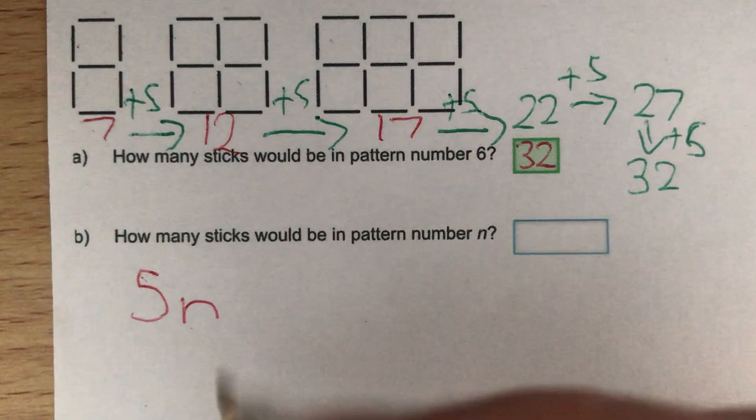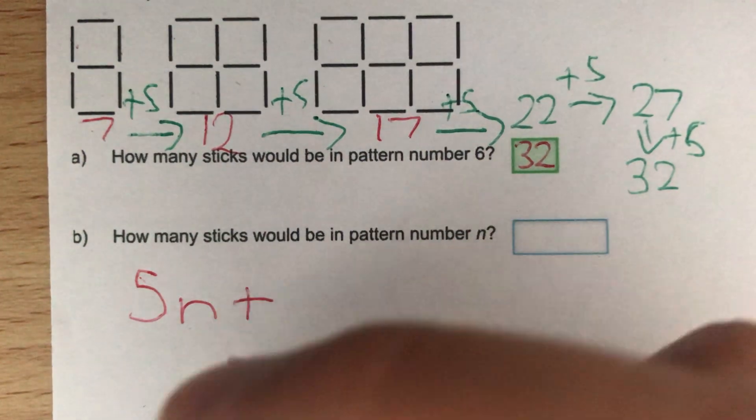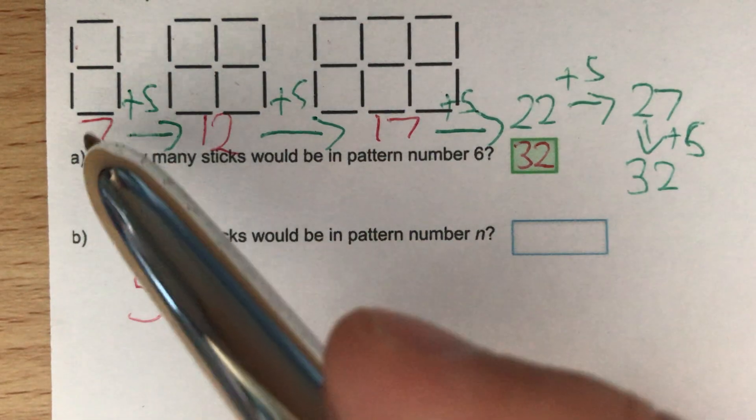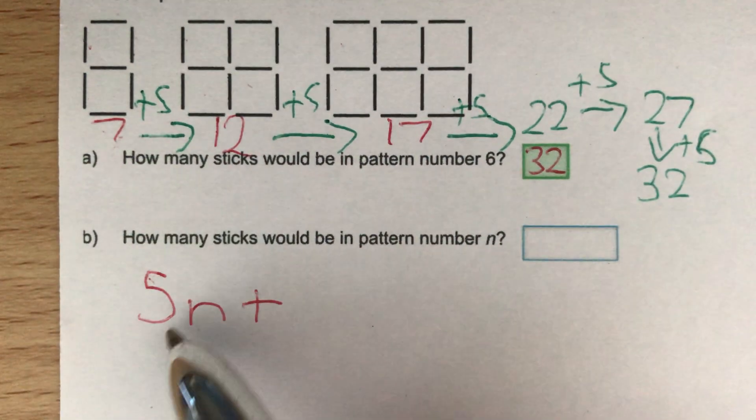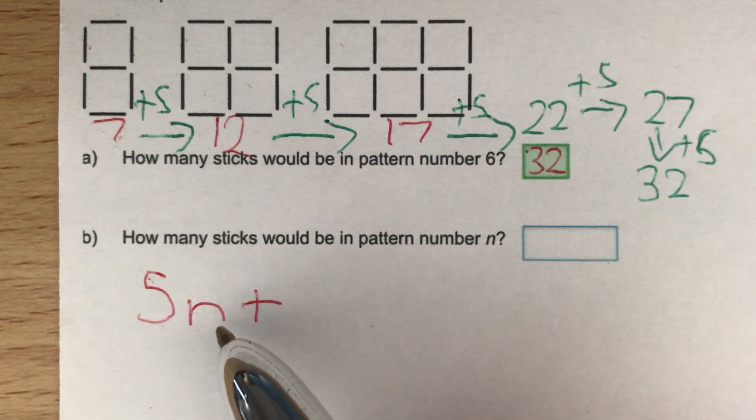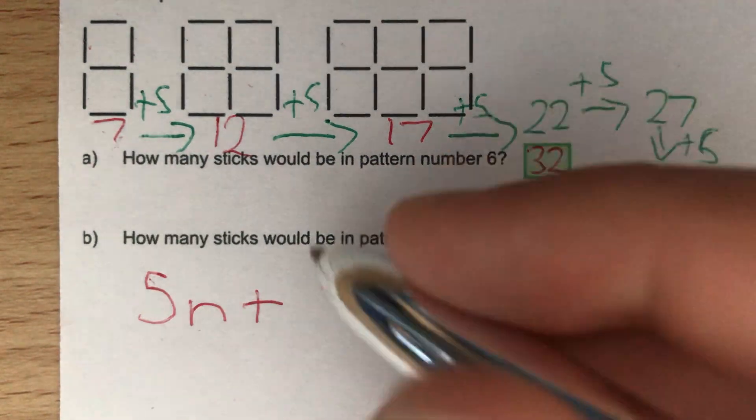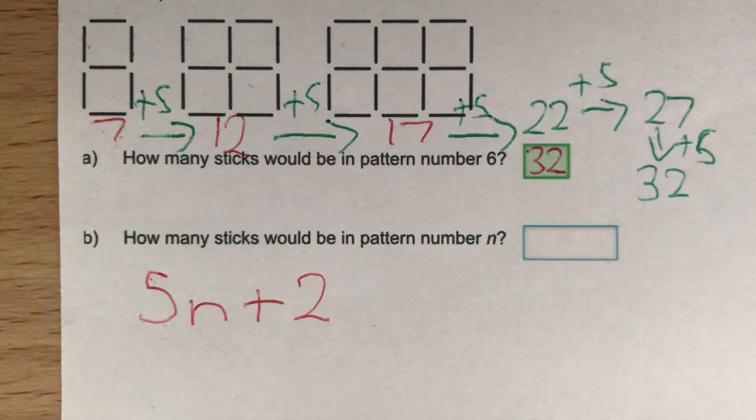And then to work out what we add on to the end of this, we need to think about what our first term is, so our first term is 7. If we've got 5 in front of the n, our first term is 7, to get from 5 to 7 we have to add 2, so our nth term is going to be 5n plus 2.